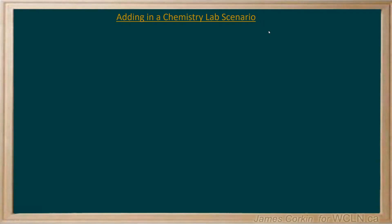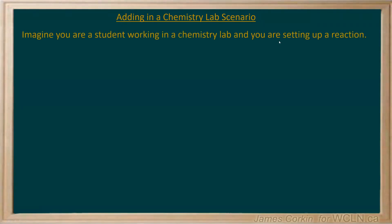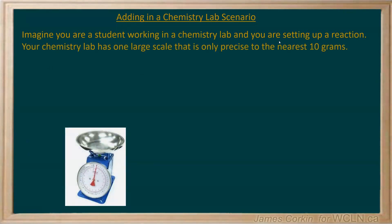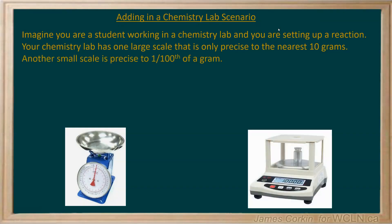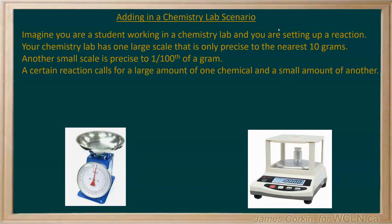Let's imagine a scenario where you are a student working in a chemistry lab. You're asked to set up a reaction. Your chemistry lab has one large scale that's only precise to the nearest 10 grams, and one small scale that is precise to 1/100th of a gram. In an ideal world you would use the small scale for all of your measurements for maximum precision. However, a certain reaction calls for a large amount of one chemical and a small amount of another, so there's going to be too much to fit on the small scale.